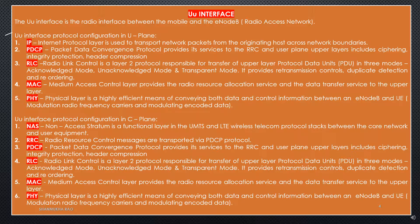UU Interface Protocol Configuration in the control plane: first is NAS — Non-Access Stratum is a functional layer in the UMTS and LTE wireless telecom protocol stacks between the core network and user equipment. Second is RRC — Radio Resource Control messages are transported via PDCP protocol. Third is PDCP — Packet Data Convergence Protocol provides its services to the RRC and user plane. Upper layers include ciphering, integrity protection, and header compression. Fourth is RLC — Radio Link Control is a layer 2 protocol responsible for transfer of upper layer protocol data units in 3 modes.